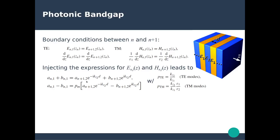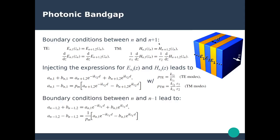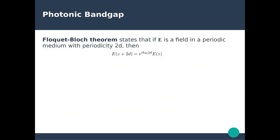We have four equations but six unknowns — a_n, b_n, a_(n+1), b_(n+1), a_(n-1), and b_(n-1) — so we cannot yet solve this system. We need to introduce the Floquet-Bloch theorem in order to solve it.